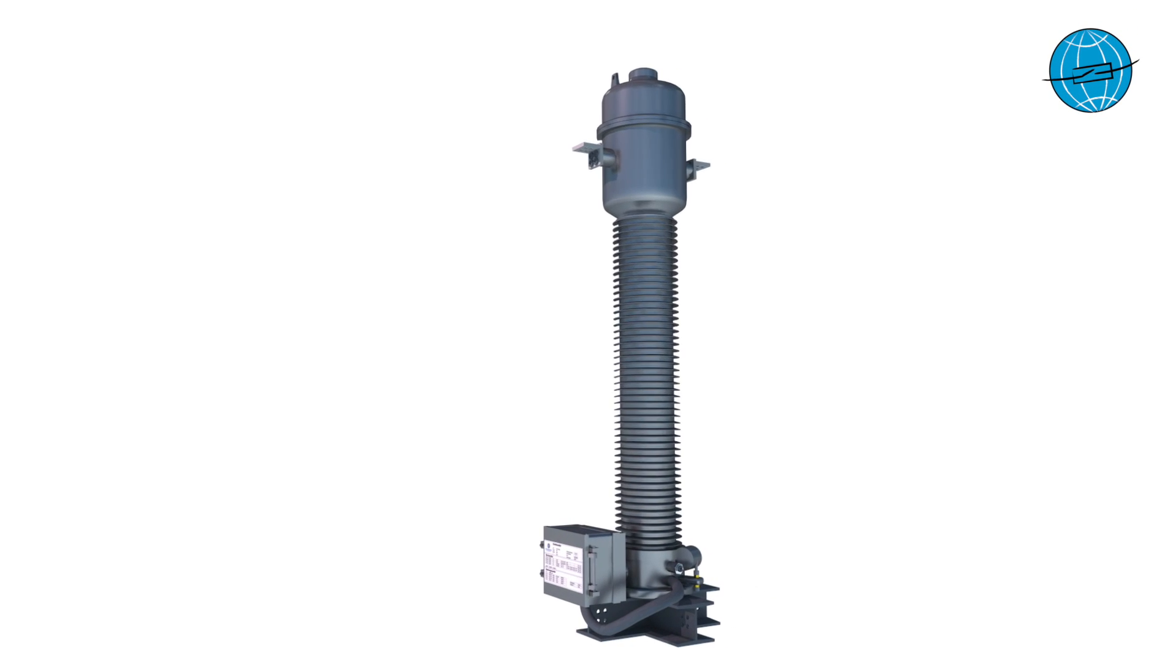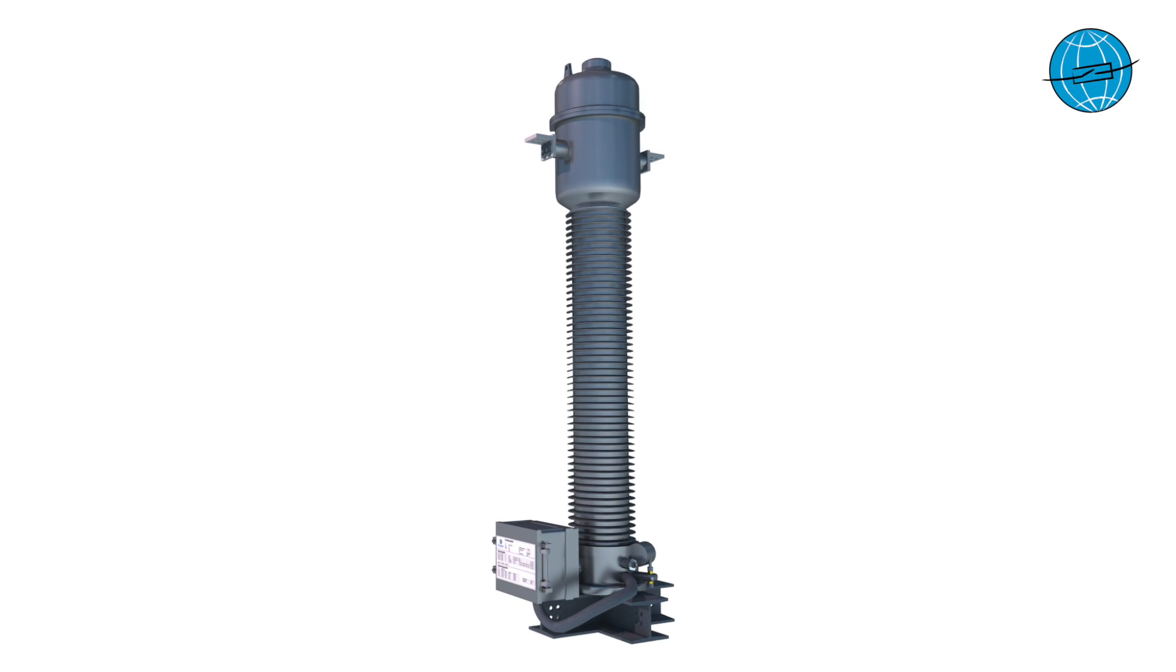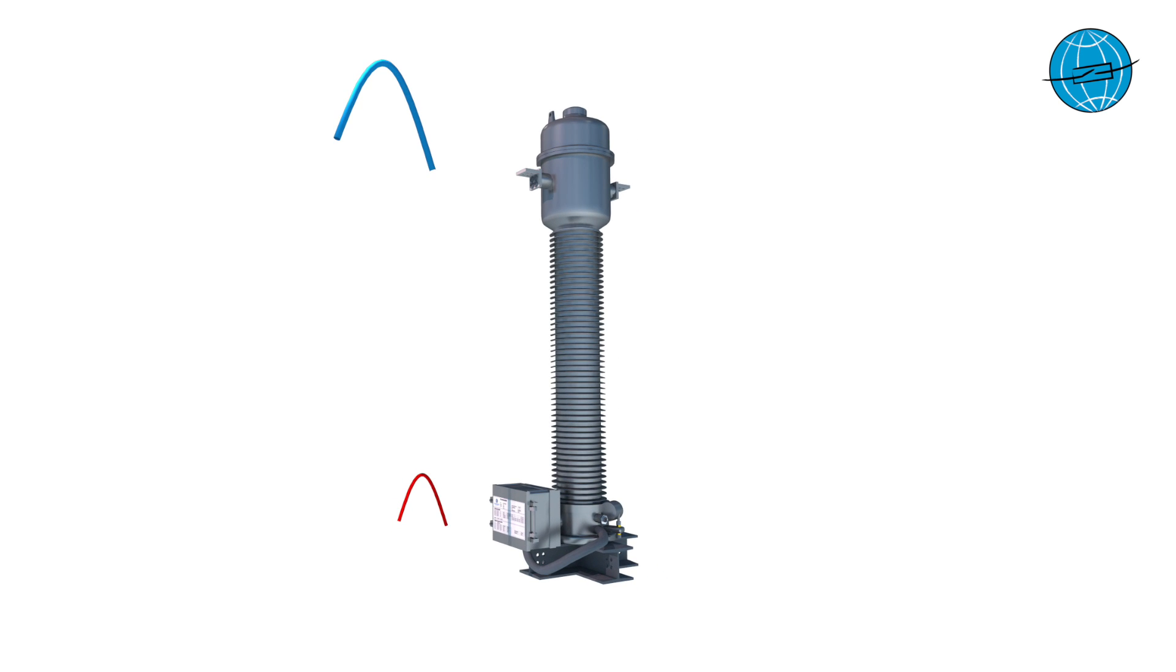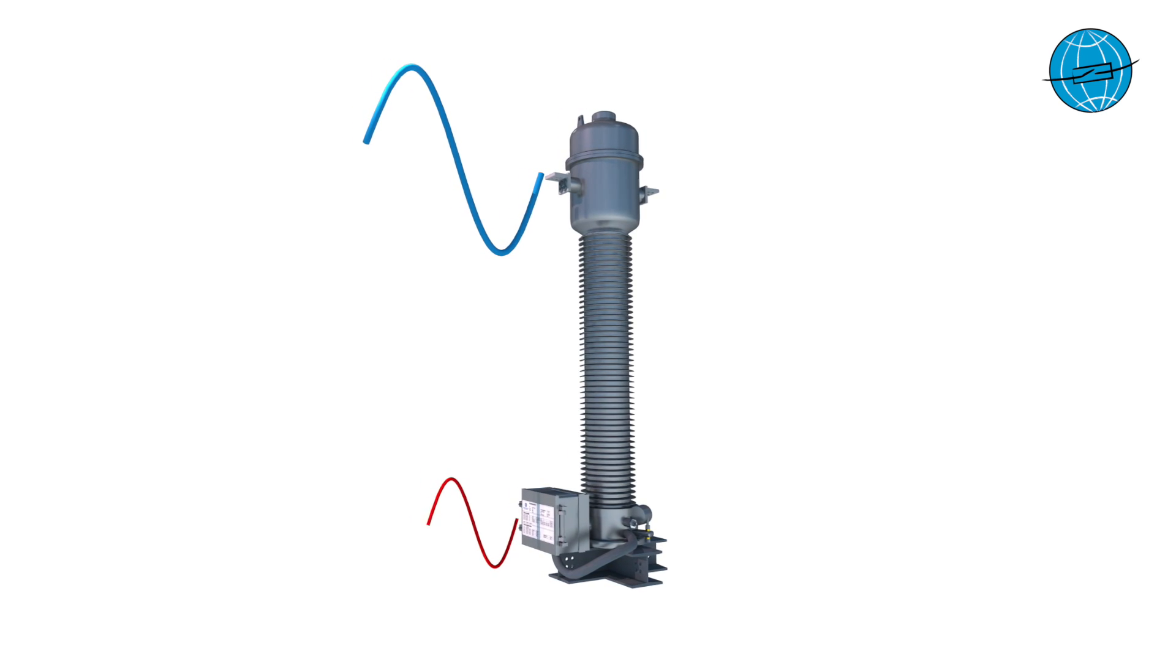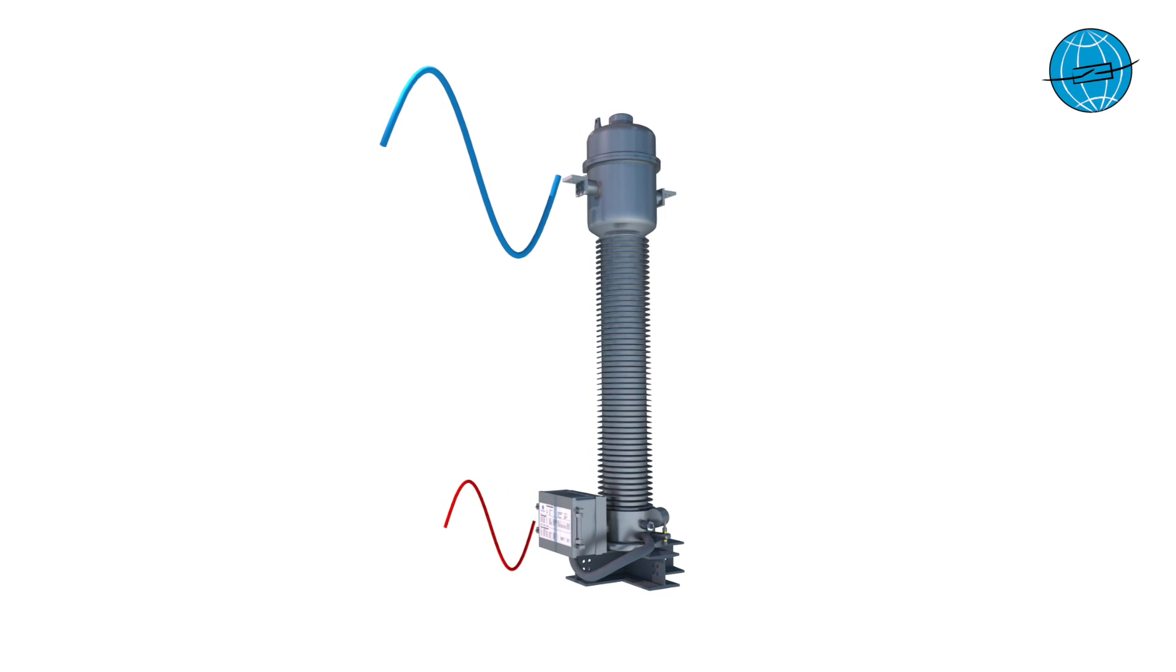Current transformers are used to transform standardized primary currents into standardized secondary currents. The AC currents converted in this way are much smaller than the primary flowing currents and can be directly processed by the connected protection control and measuring systems. In this video we look at the basic operating principle of an inductive current transformer.